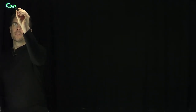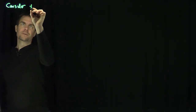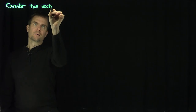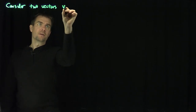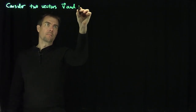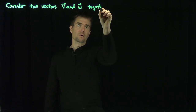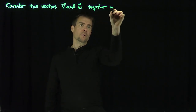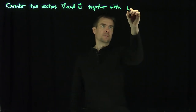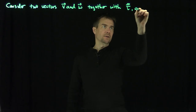Hello students. In this video, we'll see two examples of proving vector and dyadic tensor identities using standard operations. Let's consider two vectors V and W, together with a dyadic tensor tau-bar-bar.